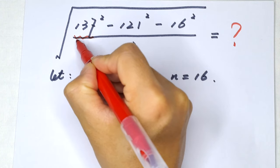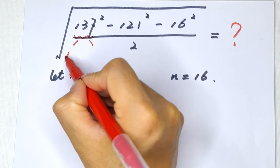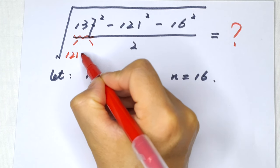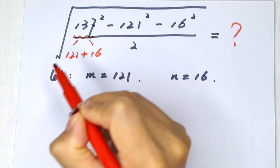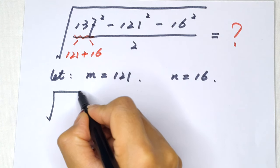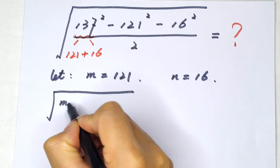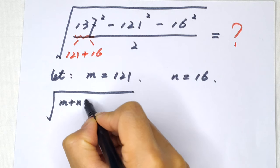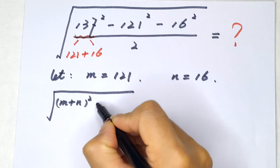137 is same as 121 plus 16. So our equation can be written as square root of (m+n) bracket squared minus